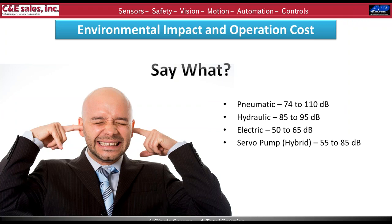Electric actuators are very quiet — around 50 to 65 decibels. For reference, 50 decibels is normal conversation level, 55 is like a meeting with multiple people talking, and 65 is a moderate to heavy rain shower. Those numbers were measured with rather aggressive velocity profiles; moving slower, the number can dip much lower. Servo pump or hybrid hydraulic actuations fall between 55 and 85 decibels, with the higher end coming from multi-axis systems or those requiring oil cooling — the chiller or heat exchanger itself was making most of that noise.